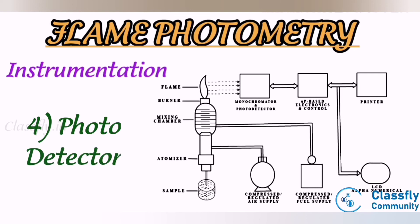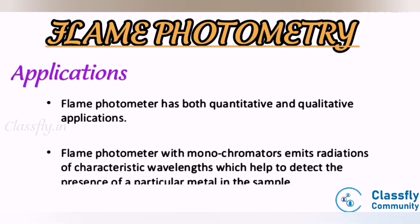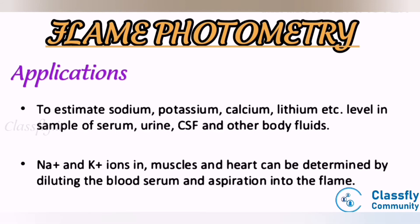The reflection from the mirror passes through the slit and reaches the filters, which isolate the wavelength to be measured from any other extraneous emission, acting as an interference-type colored filter. Fourth, photo detector: it detects the emitted light and measures the intensity of radiation emitted by the flame, converting it into an electrical signal. Applications: flame photometry is used to estimate sodium, potassium, calcium, and lithium levels in samples of serum, urine, CSF, and other body fluids.